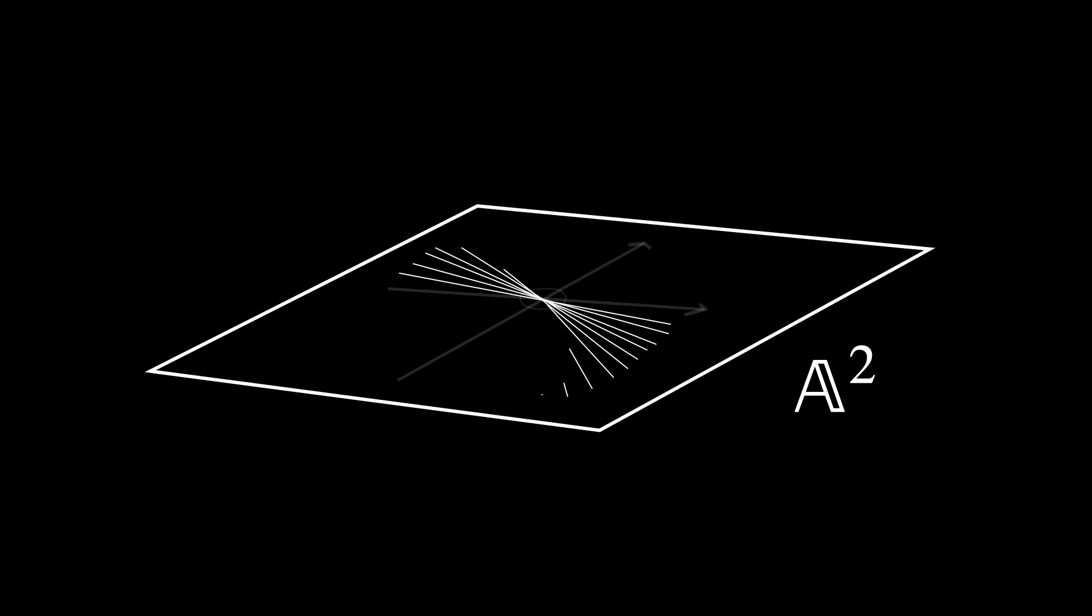Blowing up and blowing down are operations in algebraic geometry that are particularly significant in the study of surfaces. We have a space A², which is a 2D coordinate plane with coordinates x and y. We focus on the origin. At the origin is a point. From this point, we can draw infinite lines that pass through this point, each defined by a slope m equals y over x.